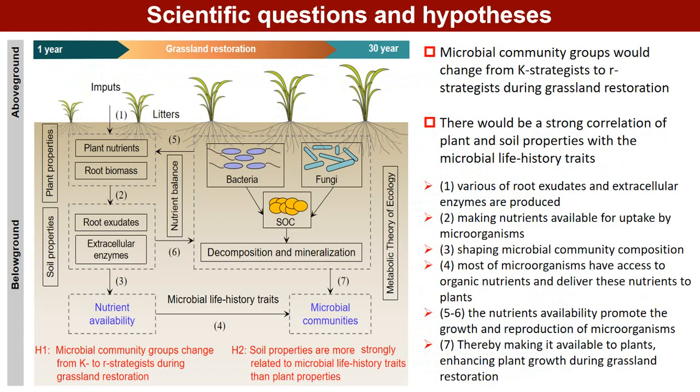However, whether K and r life history strategies can be applied to soil microbes is a topic to explore. Thus, we made the following two hypotheses. One hypothesis is that microbial community composition changes from K-strategy to r-strategy during grassland restoration. Another hypothesis is that there would be a strong correlation of plant and soil properties with microbial life history traits.